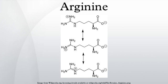At the level of molecular genetics, in the structure of the messenger ribonucleic acid mRNA, CGU, CGC, CGA, CGG, AGA, and AGG are the triplets of nucleotide bases or codons that code for arginine during protein synthesis.